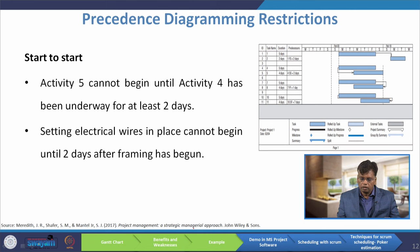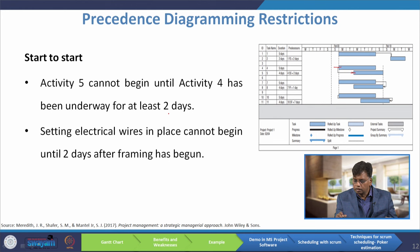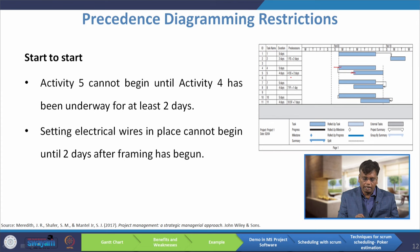The next relationship is start-to-start. The arrow starts from the start point of the predecessor. For example, activity five cannot begin until activity four has been underway for at least two days — written as 'start-to-start plus two days.' This means activity five starts two days after activity four has started. A real-world example: setting electrical wires in place cannot begin until two days after the framing has begun.